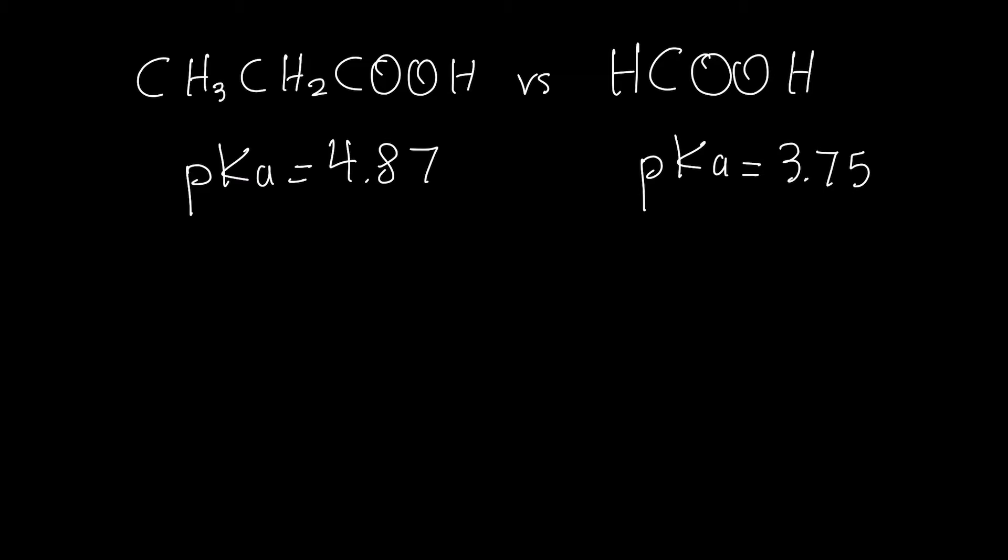Now what you need to understand is that as the pKa value increases the acid strength is going to decrease. So if you want to find the stronger acid you're going to have to find the one with the lower pKa value which would be formic acid since 3.75 is lower than 4.87.